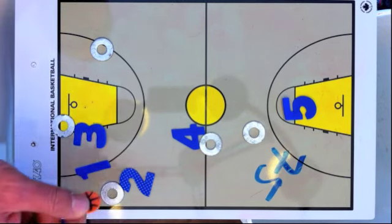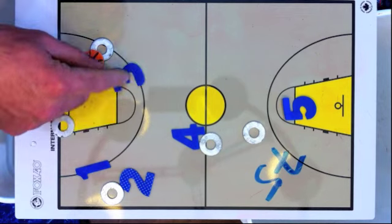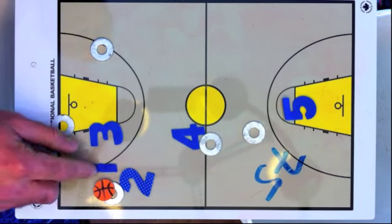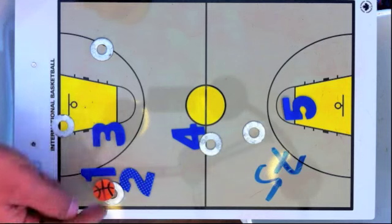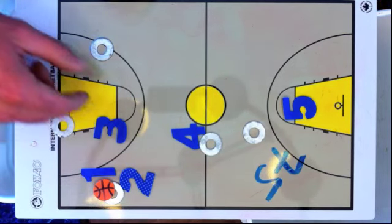If they make this pass, that's okay. We'll just recover. But we don't want to have a nice, easy pass like that. We want them to have to make them pass over the trap, over one of our guys, make it a little bit tougher.